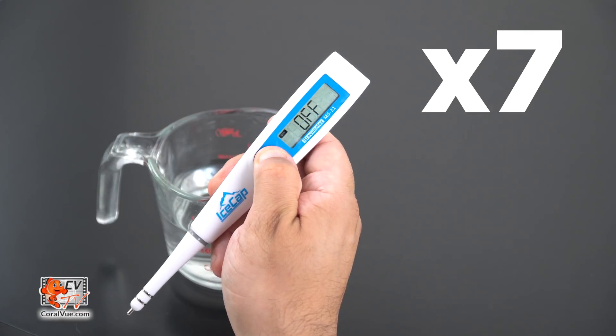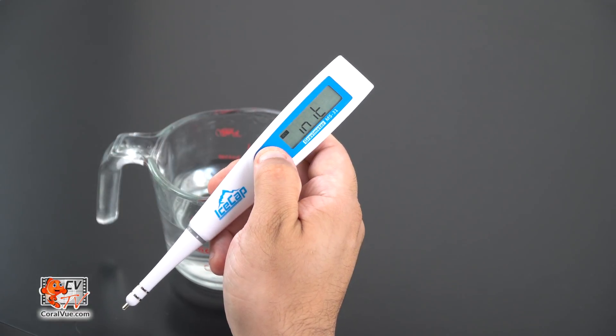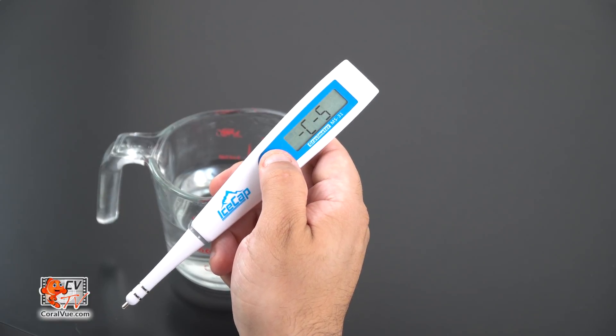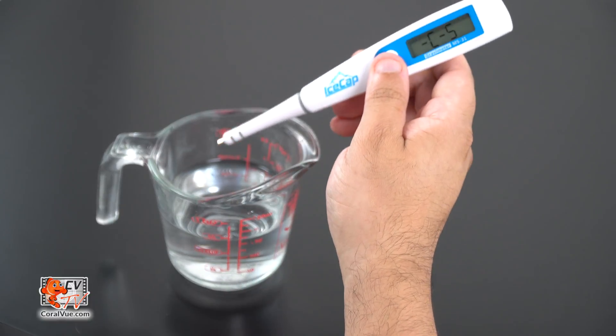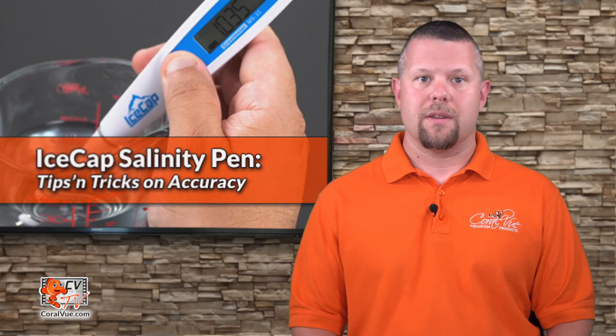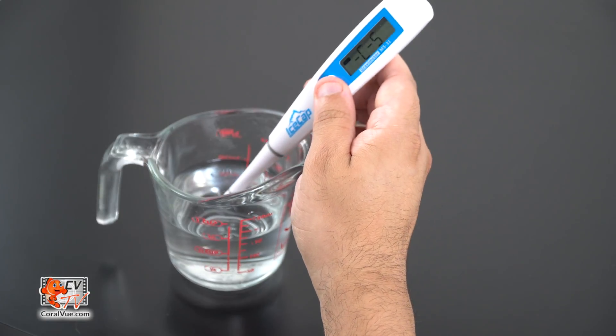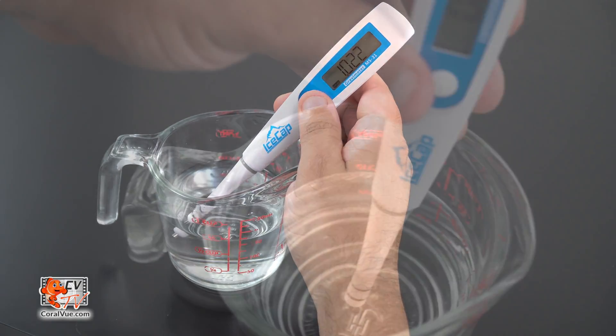With the pen off, click on the power button seven times quickly. It will turn on the screen and will display a CS. If you do not see this, then try again. Submerge the tip of the pen in the calibration solution.